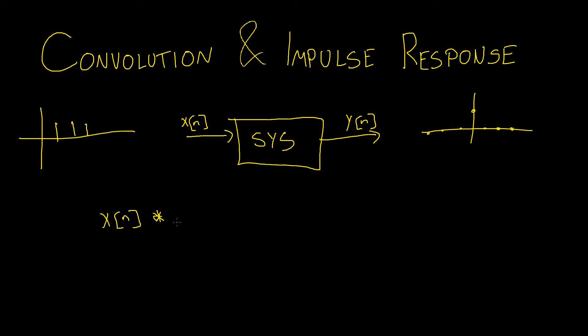Which is given by h of n, and then that's equal to our output y of n. And this is the entire logic behind convolution.